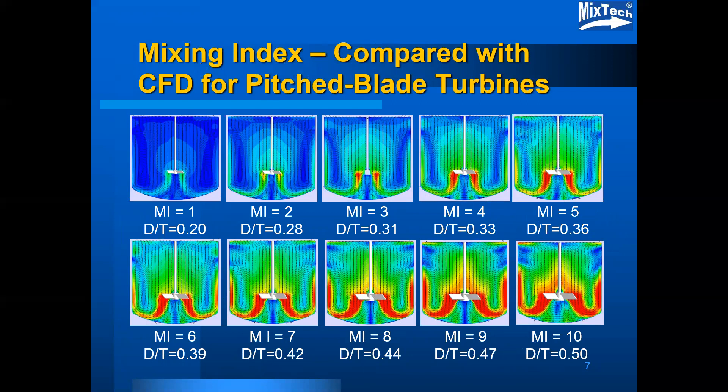This is a representation of what the 1 to 10 mixing index looks like in terms of velocity distributions calculated by computational fluid dynamics. While these can be accomplished by changing the rotational speed, it's not practical for an industrial application to have that much of a speed range, so the impeller to tank diameter ratio was also increased as the mixing index increased. These adequately represent typical types of industrial mixing applications.